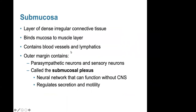The submucosa is a layer of dense irregular connective tissue. It binds the mucosa to the muscle layer and contains blood vessels and lymphatics. The outer margin contains parasympathetic neurons and sensory neurons, called the submucosal plexus — a neural network that can function without the CNS and regulates secretion and motility.